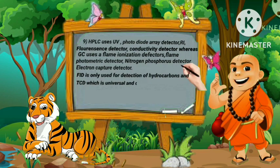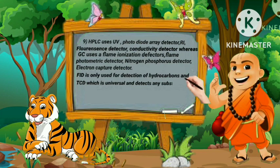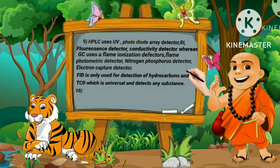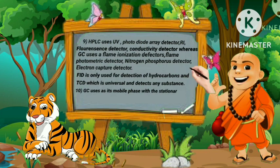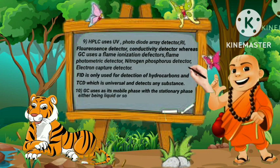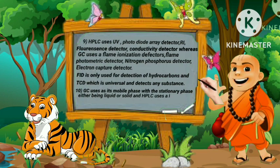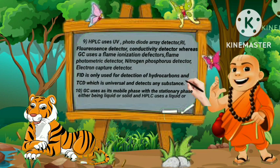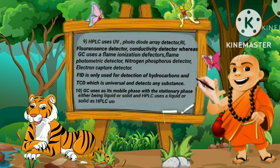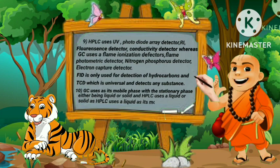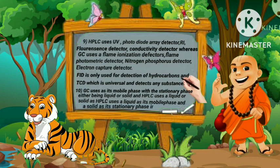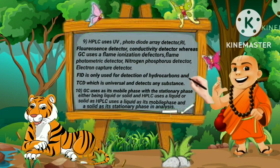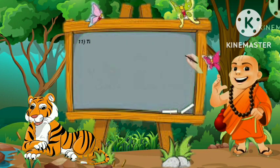Tenth, GC uses a gas as its mobile phase, with the stationary phase being either liquid or solid. HPLC uses a liquid or solid as its mobile phase and a solid as its stationary phase.